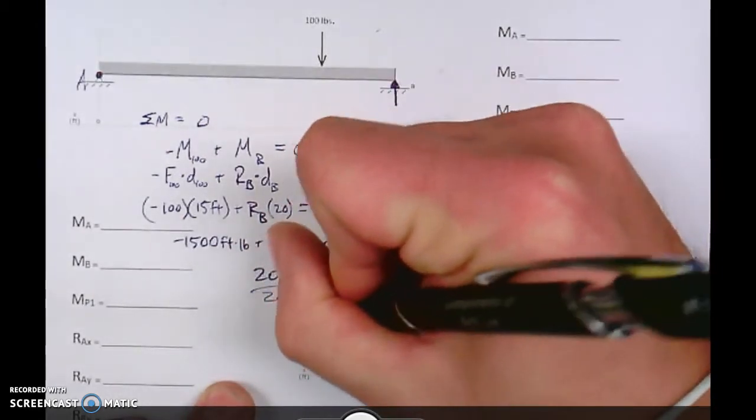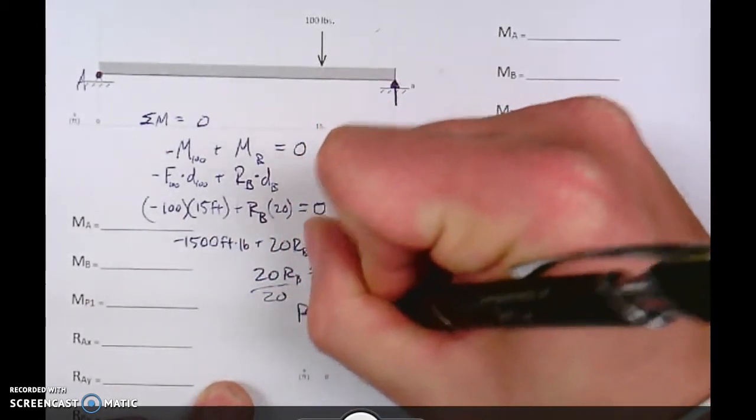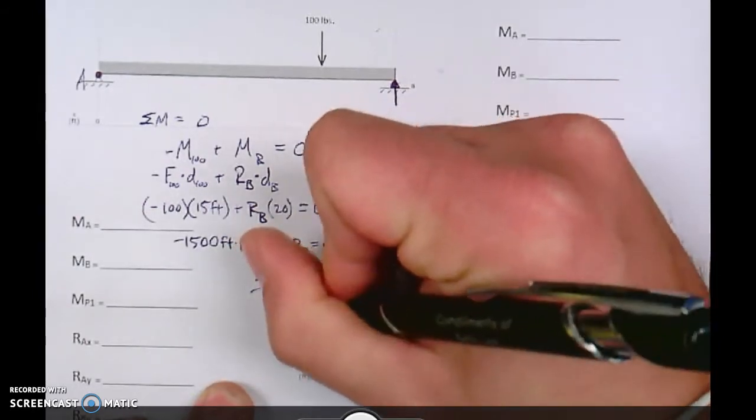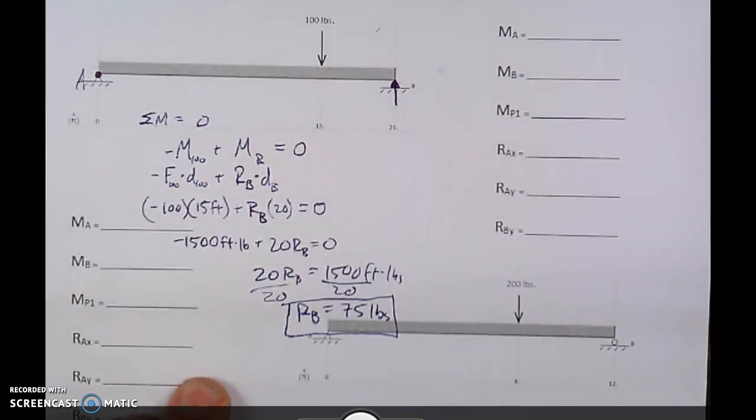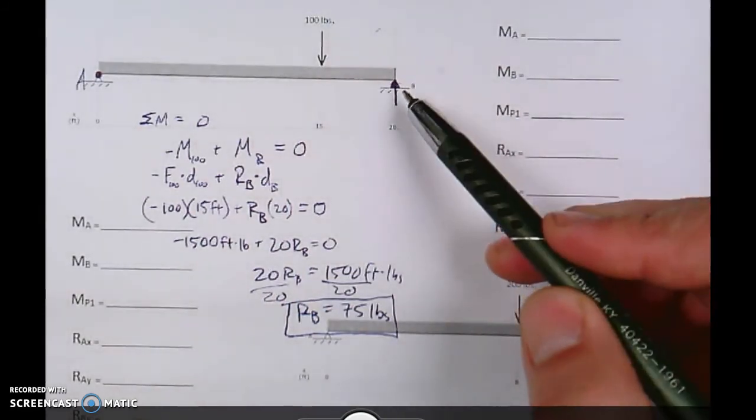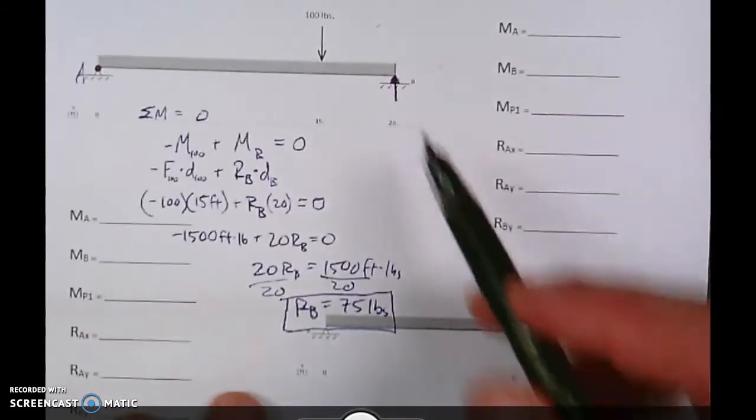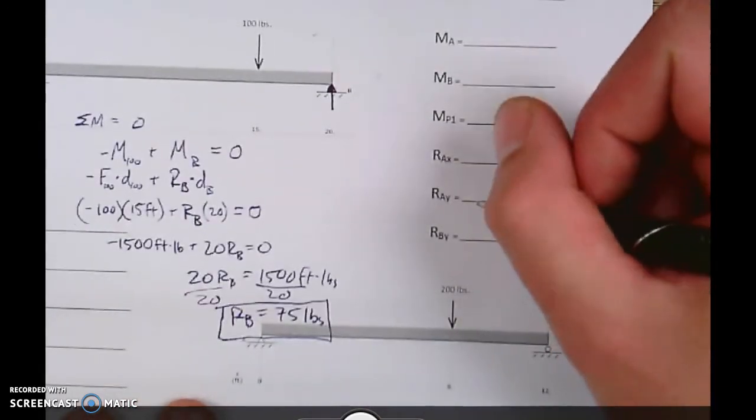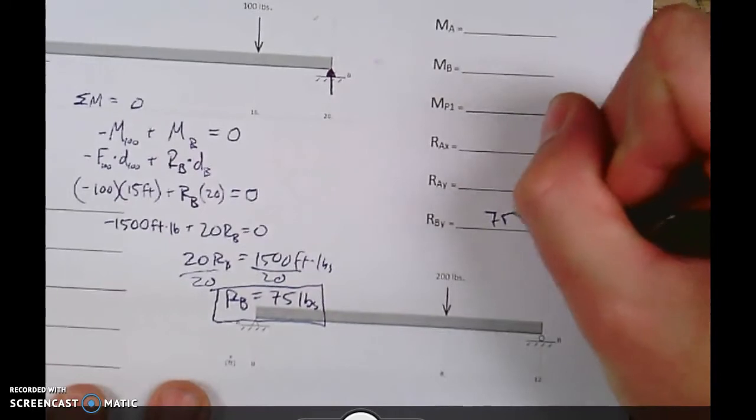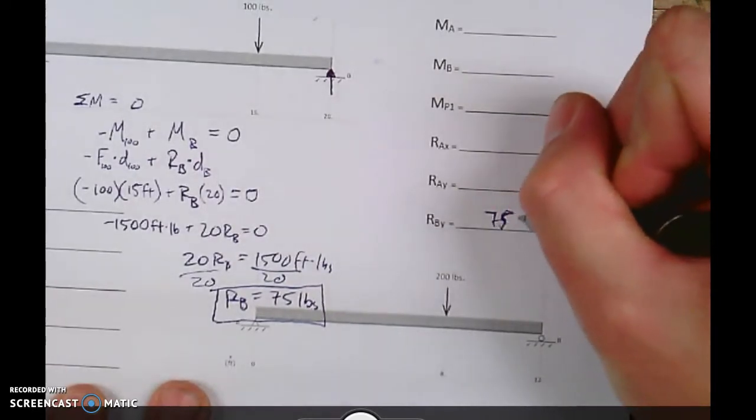So, RB equals 75 pounds. I'm running out of space here. I apologize. So that is the reaction force at B. I'm going to go ahead and put that. That's in the Y dimension. So I'm going to come over here to RBY. And I'm going to put 75 pounds.